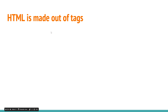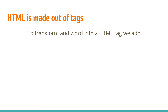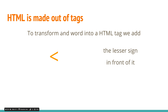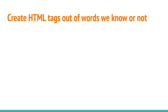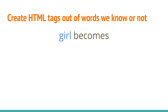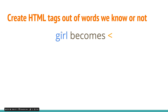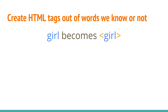HTML is made out of tags. To transform any word into an HTML tag — any word you can think of, any word you can picture in your mind — we add the lesser sign in front of it and the greater sign at the end of it. I've asked my wife to pick a word and she came up with 'girl'. So 'girl' will become lesser sign, girl, and greater sign. And that's it — now we have an HTML tag.